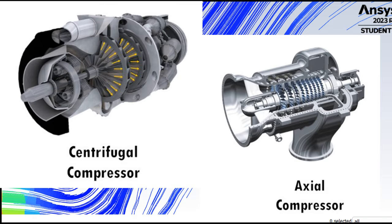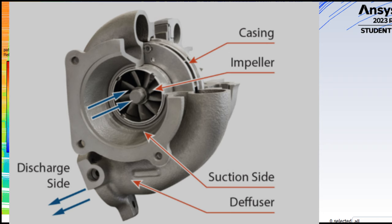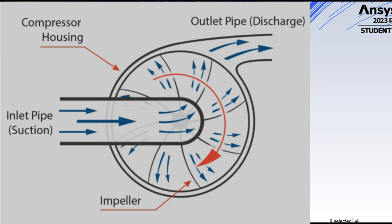Parts of a centrifugal compressor. Impeller: the rotating element of the centrifugal compressor, responsible for imparting kinetic energy to the gas and accelerating it outward towards the periphery.